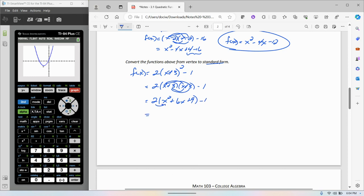Now we distribute the 2. So we have 2x squared plus 12x plus 18 minus the 1. So here's that equation in standard form.